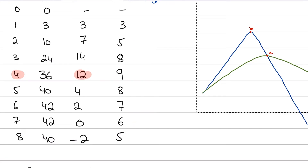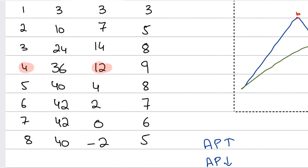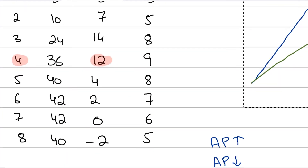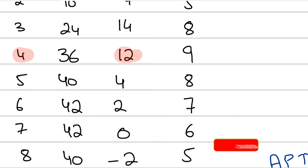So we establish the relation that the average product is initially increasing and then starts to fall. A lot of people think the average product starts to fall purely because of diminishing marginal returns, but while diminishing marginal returns does play a role, there is something very important to note: diminishing marginal returns sets in at the fourth worker, yet the average product still rises after that point. The rise or fall of the average product is not entirely dependent on diminishing marginal returns — it is more dependent on the marginal product.